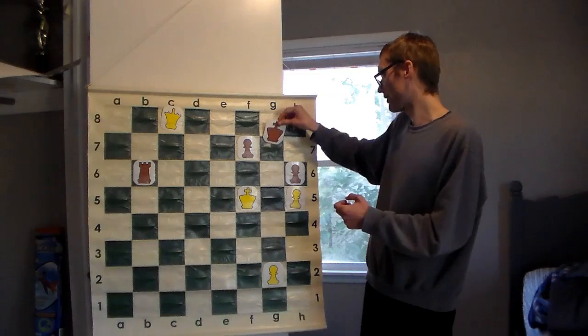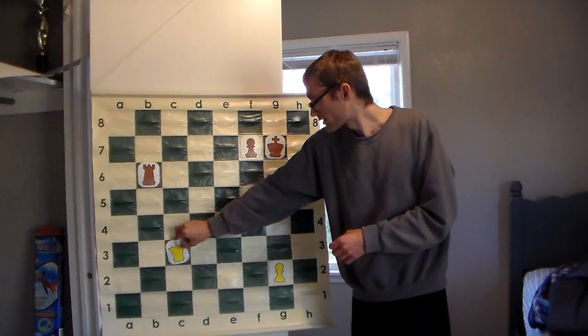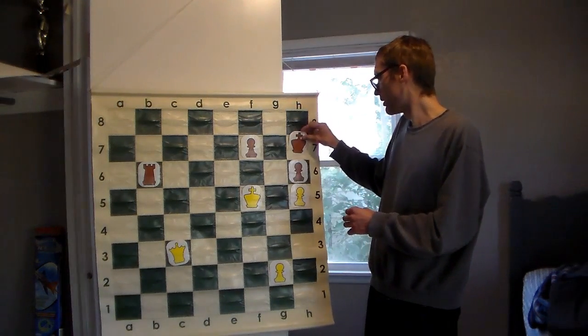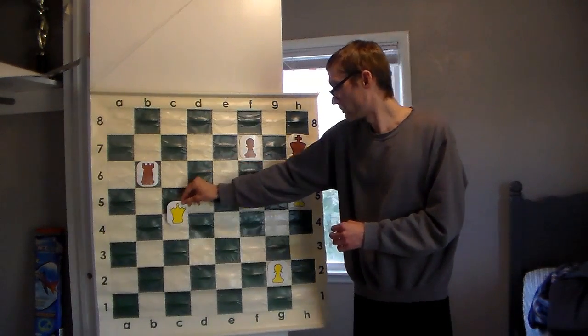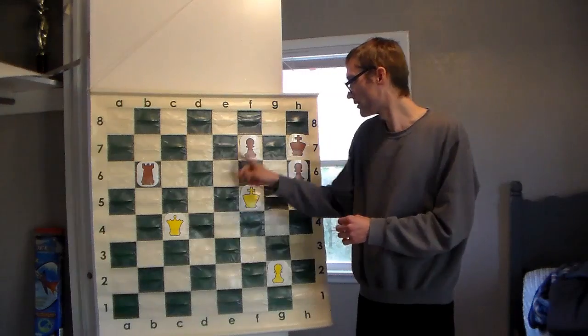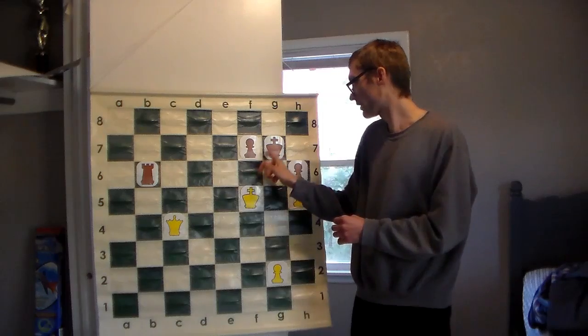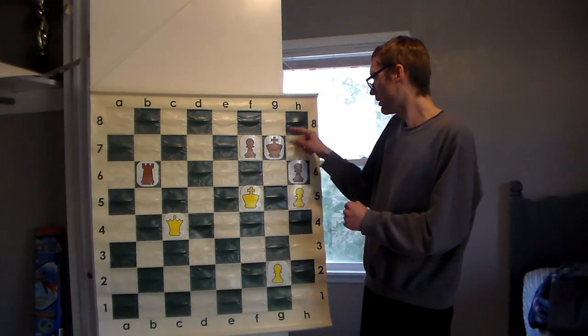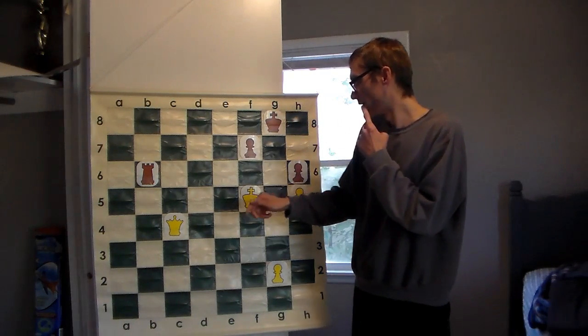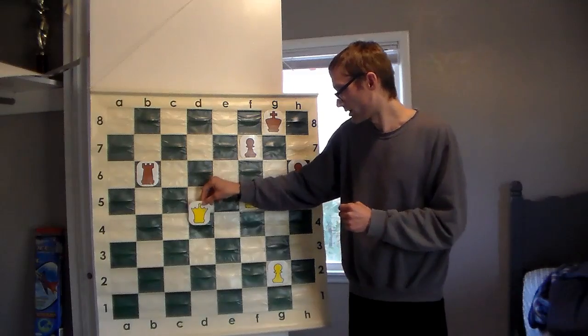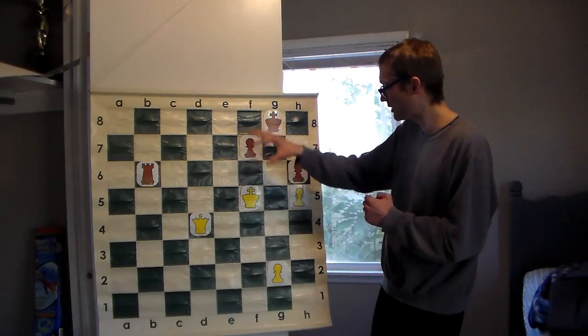We could start with a check like this, the King moves up, maybe another check. White's not really making a whole lot of progress here, so maybe we just move the Queen in a little bit closer. Let's move it up one to attack the pawn. The King moves back, and if that happens then we have a check picking up the Rook.